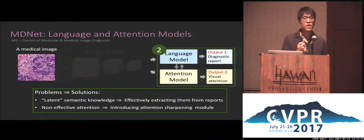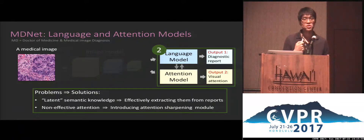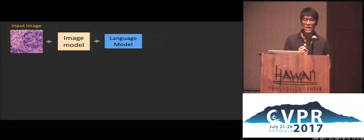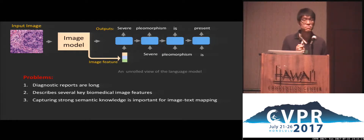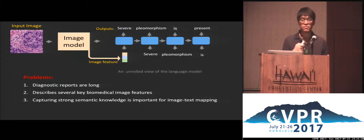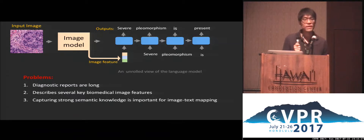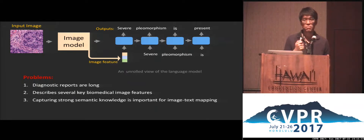For the language and attention model, we need to focus on two things: how to effectively extract the semantic knowledge from reports, and how to generate more effective attention maps. To generate text given images, the image model computes image features which are used in the language model to generate relevant text one word at a time. Different from natural image captions, a medical image contains different kinds of biomedical image features. To obtain a better mapping between image and text, we need the image model to understand the semantic knowledge. Using a single forward model for full reports brings difficulty to capture strong semantic concepts during optimization.